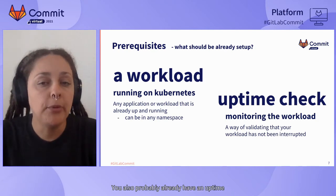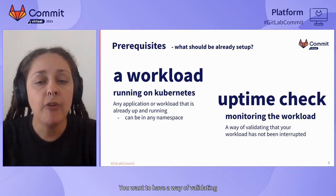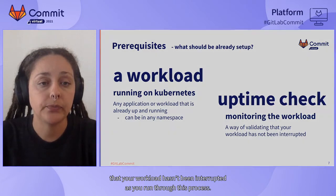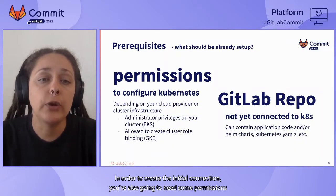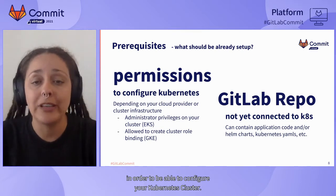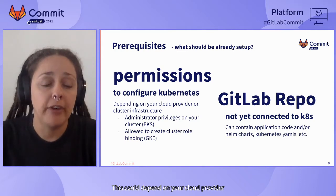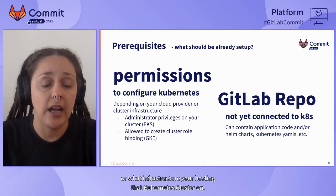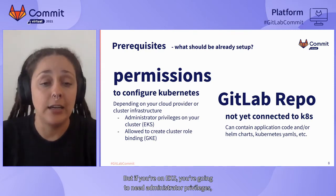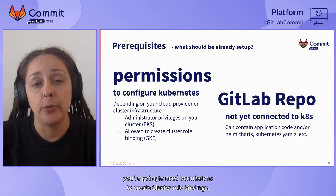You also probably already have an uptime check or something monitoring the workload. You want to have a way of validating that your workload hasn't been interrupted as you run through this process. In order to create the initial connection, you're also going to need some permissions to configure your Kubernetes cluster. This depends on your cloud provider — if you're on EKS, you'll need administrator privileges, and if you're on GKE, you'll need permissions to create cluster role bindings.